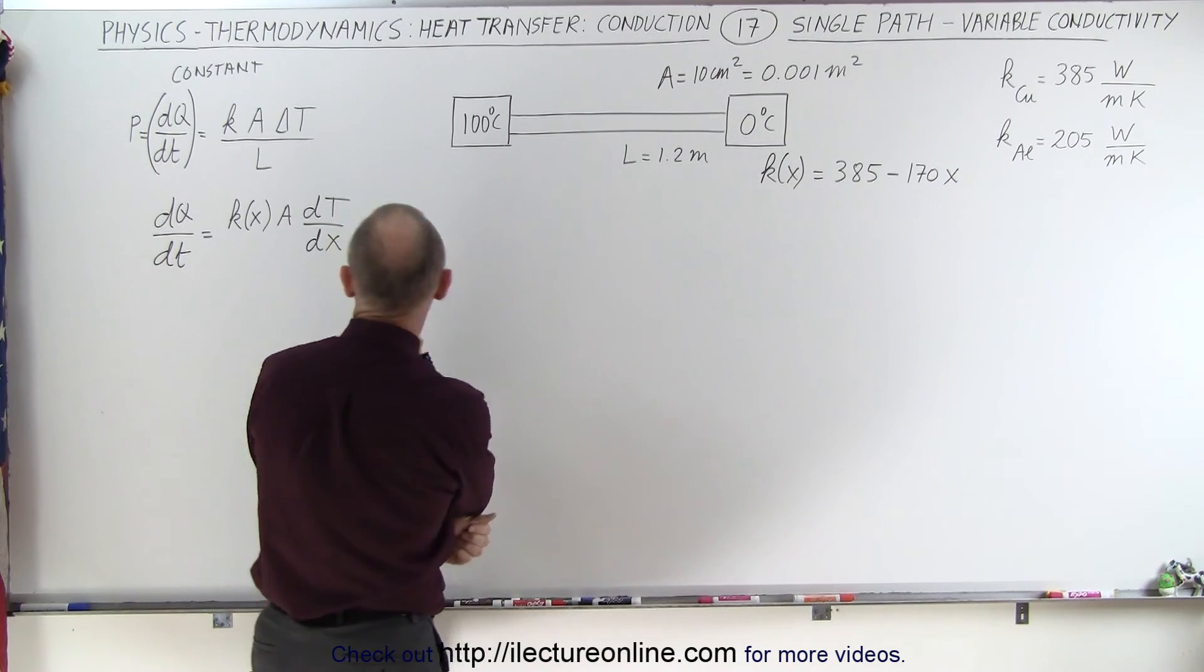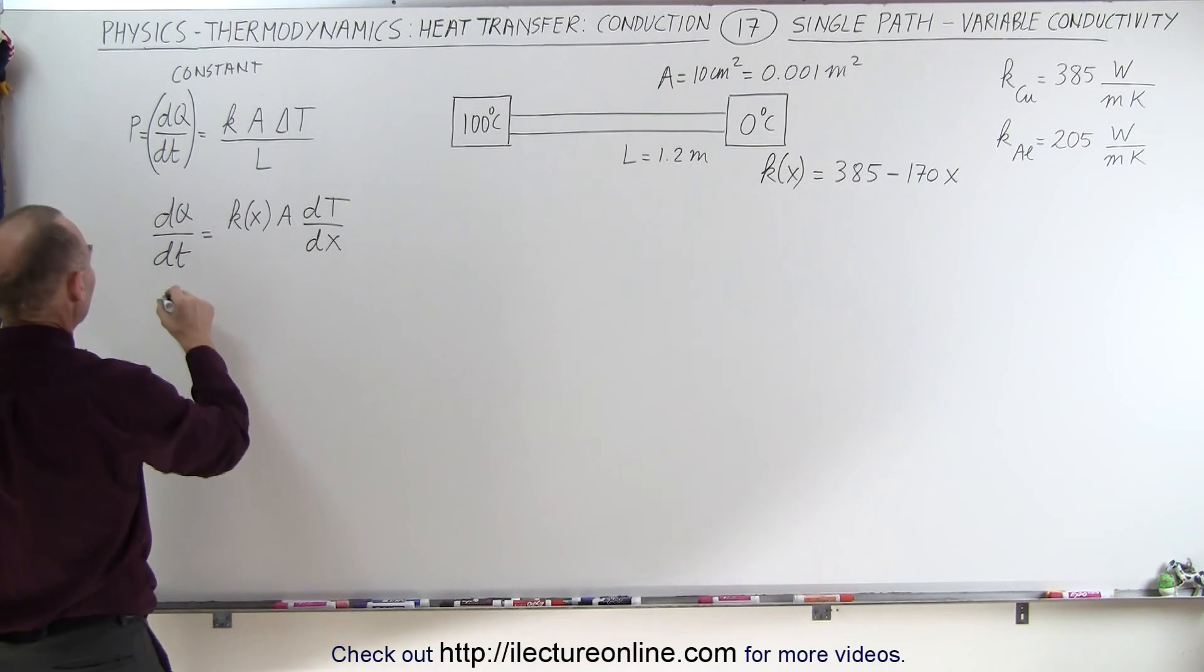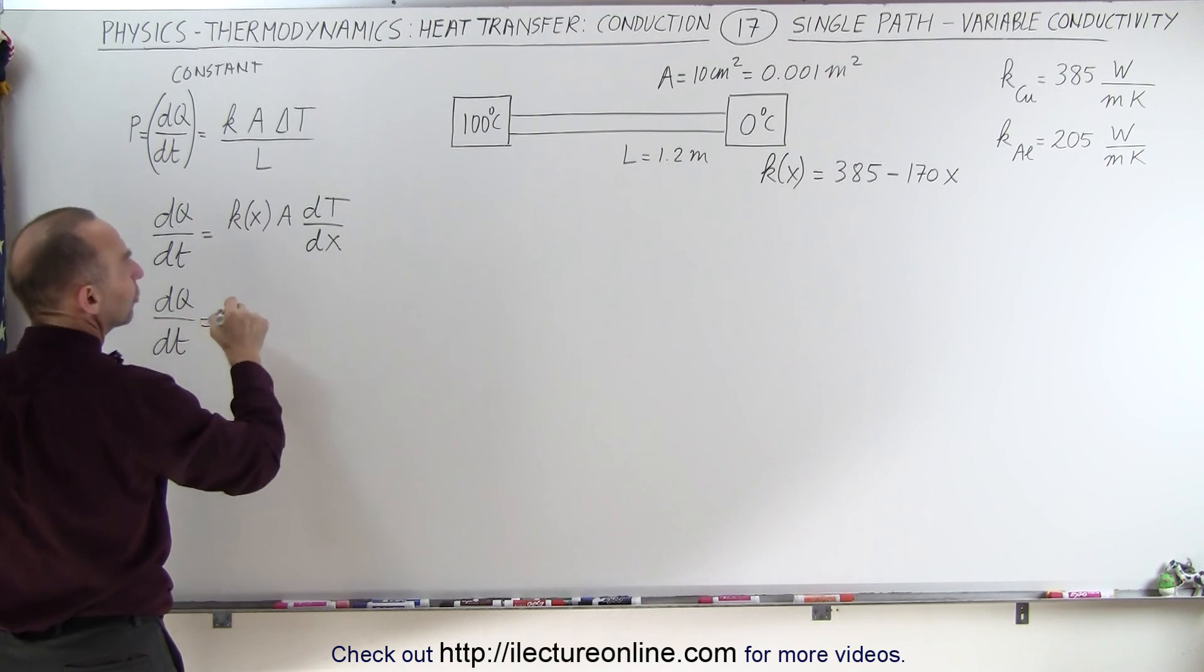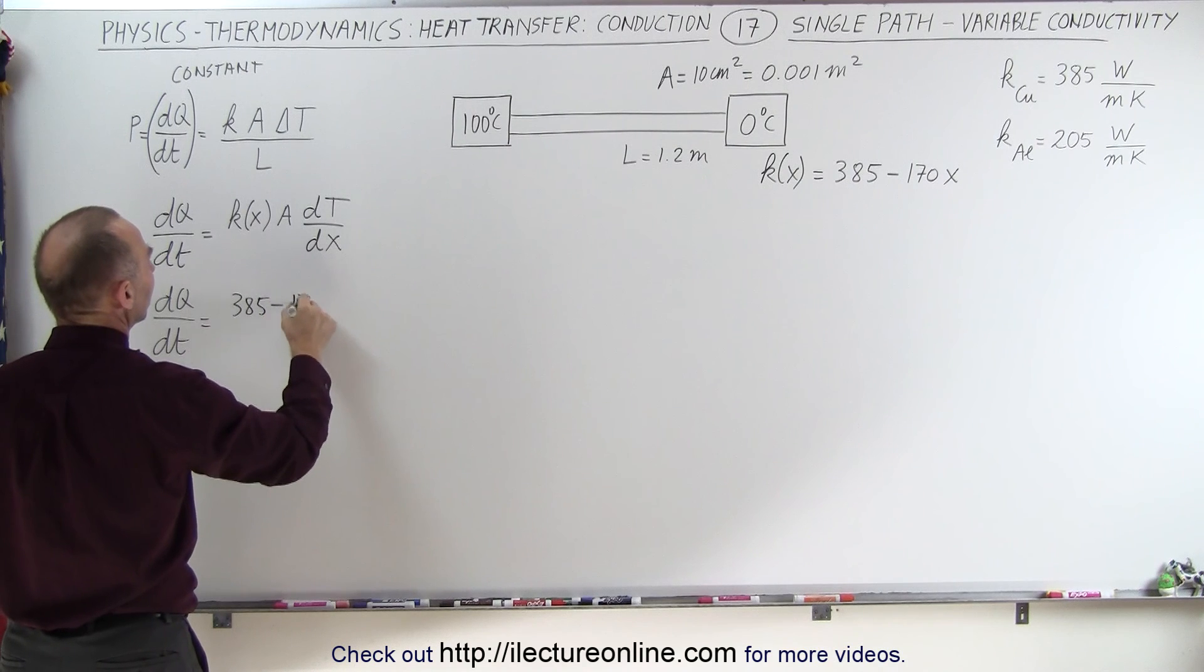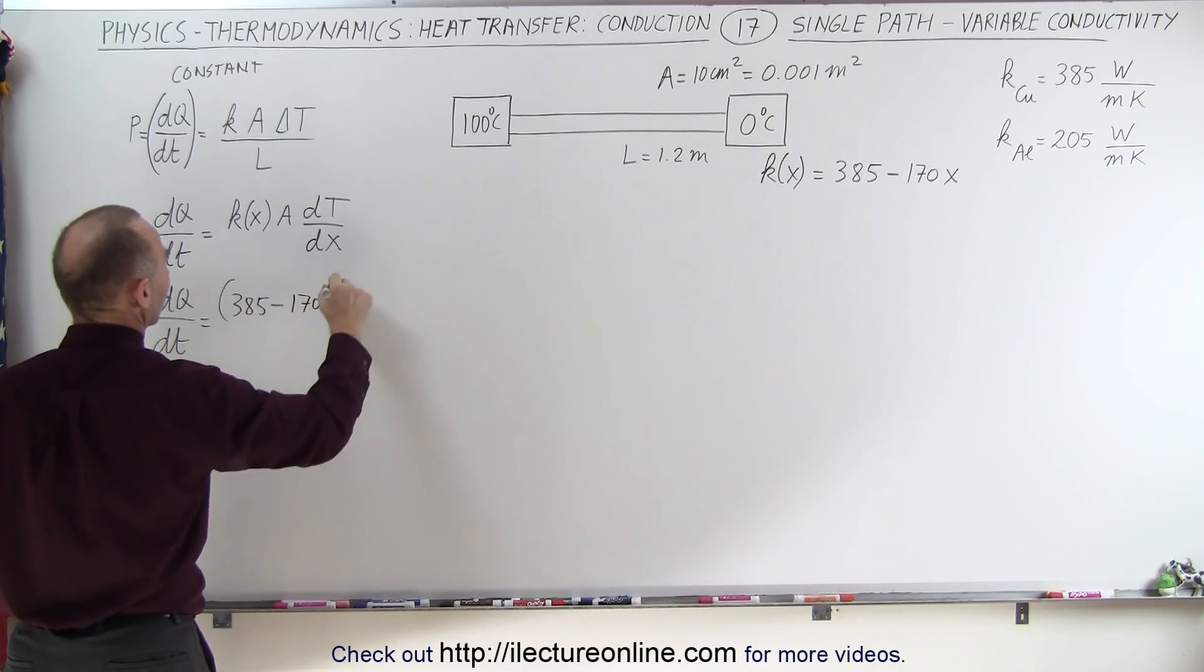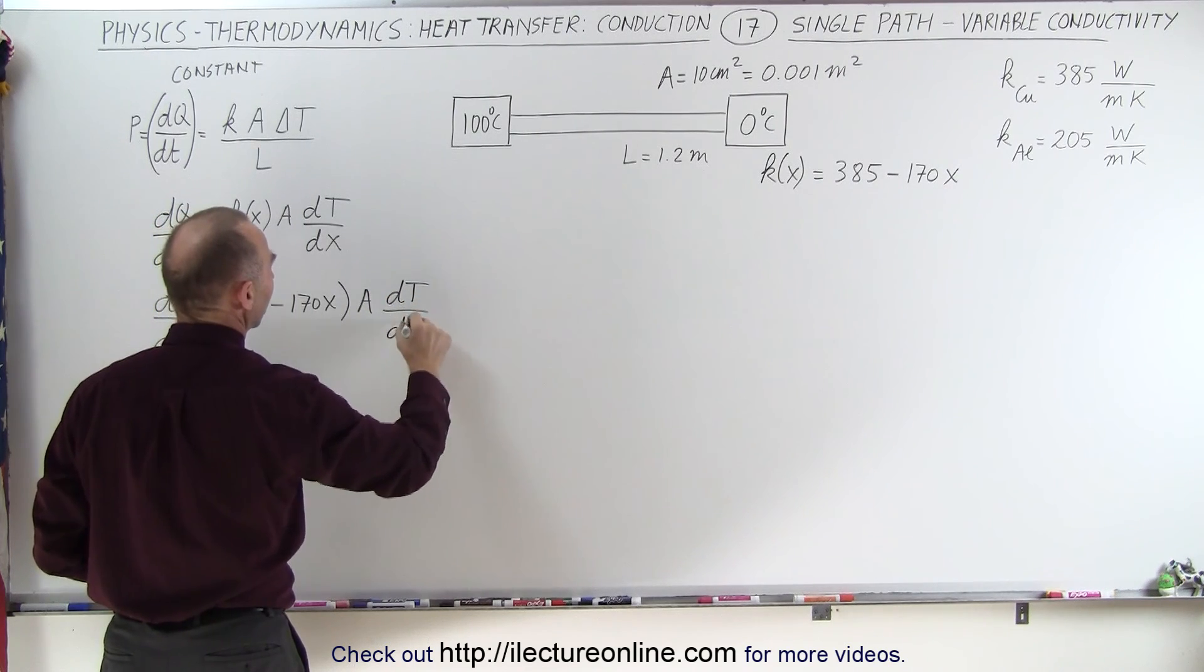All right, how do we solve this? Well, first let's plug in what k is equal to and see what we get. So dQ/dt is equal to 385 minus 170x times A times dT divided by dx.